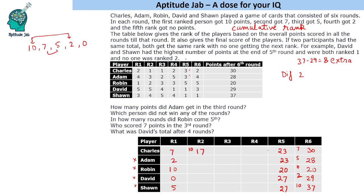If you see 17 and 23 for Charles, he is getting 6 points across 3 rounds. The only possibility to score 6 points in 3 rounds from the available options is 2, 2, 2. So if we put 2 in round three, that gives 19; 2 more in round four gives 21; and 2 more to reach 23.